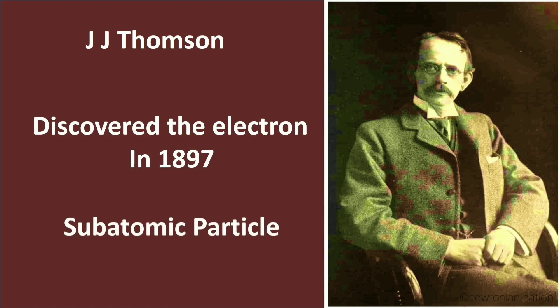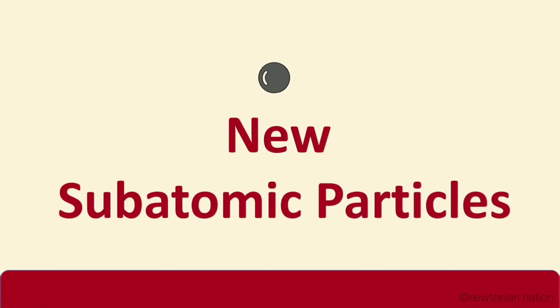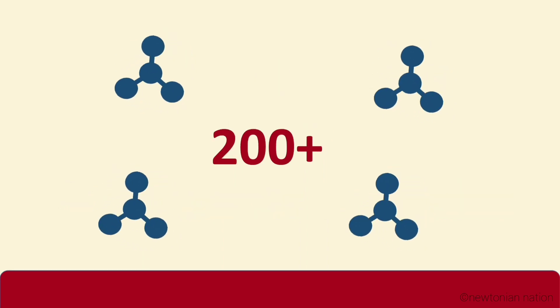The electron is the first discovered subatomic particle. After many years of research, scientists found many new subatomic particles, and now we've found more than 200 subatomic particles.